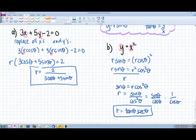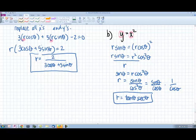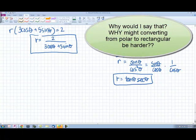Converting from rectangular to polar form, just like with converting the points from rectangular to polar, is generally easier. What's a little bit trickier will be converting from polar form back to rectangular.